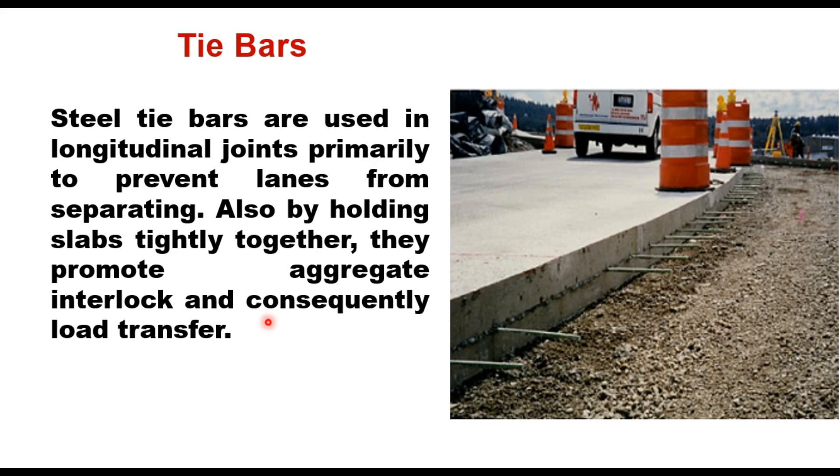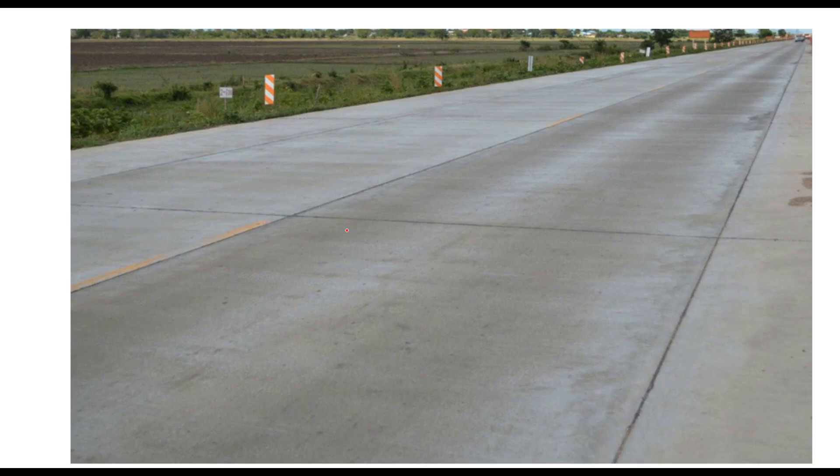So in a concrete pavement, there are two types of joints. One is transverse joint, another is longitudinal joint. Dowel bars are provided in the transverse joint and tie bars are provided along the longitudinal joint. The purpose of these dowel bars is to transfer the load from one slab to another slab when the wheel jumps over the gap.